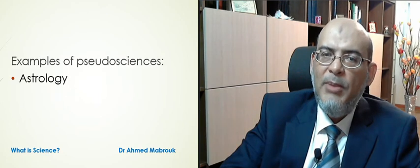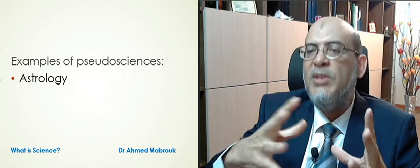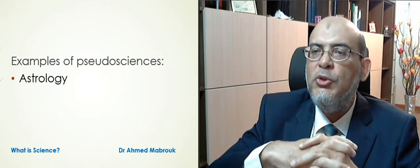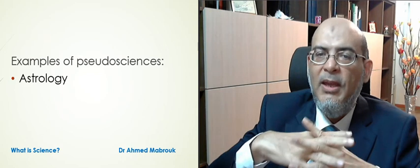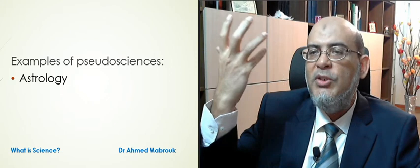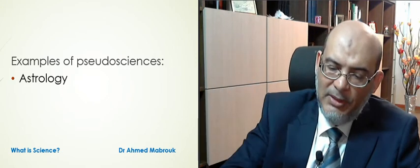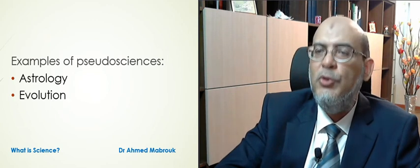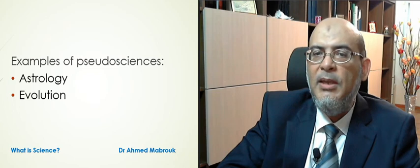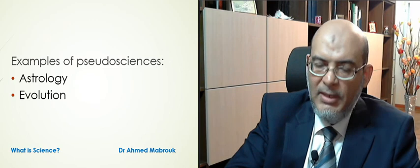Since we talked about science, let us give a couple of examples about pseudo-science — fake science. Astrology is one of them, because astrology is based on the assumption that the locations of the planets affect our lives, which is not a proven assumption. Another example of pseudo-science, in my view, is evolution. For me, evolution is an ideology, not science, and it is based on unproven conjectures, so it wouldn't qualify as science.